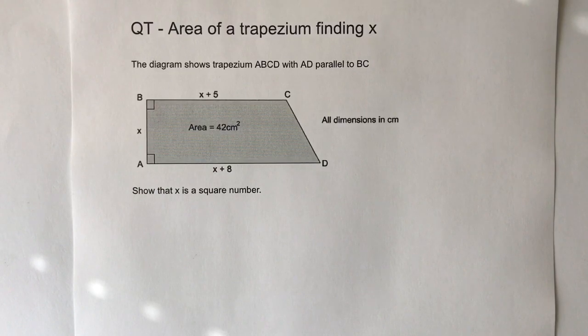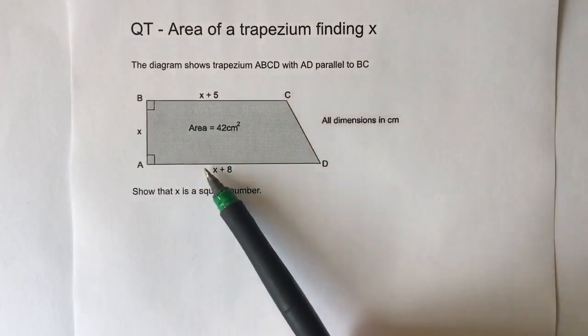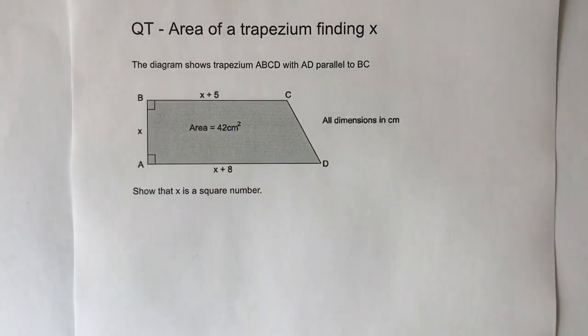And the information we've been given is we've got a trapezium, we know the area and we know this dimension, this dimension and this one.